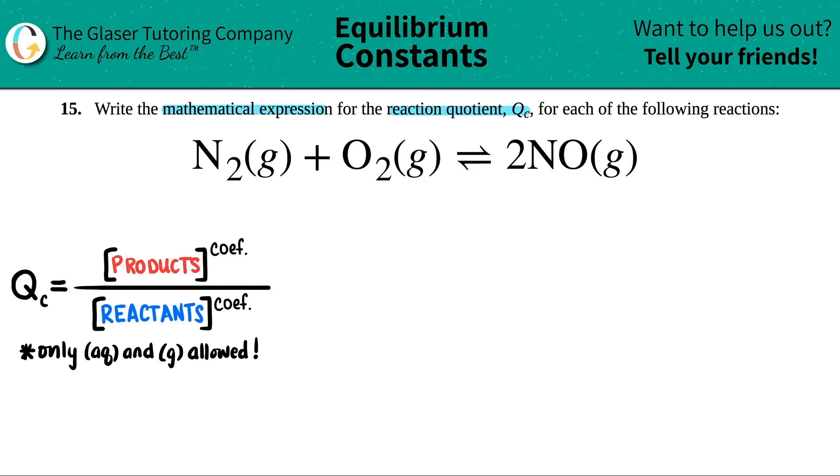Now there are some rules here. Only aqueous material and gases are allowed in this formula. So the first thing is, look at those states. But here, I got a gas, I got a gas, and I got a gas. Gases are allowed, so all of these are going to be in the QC formula.